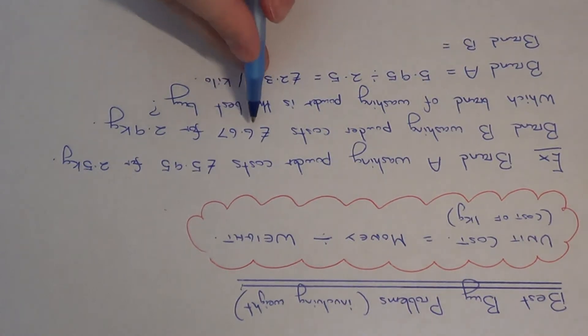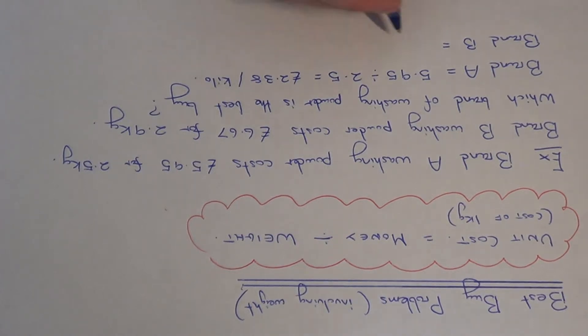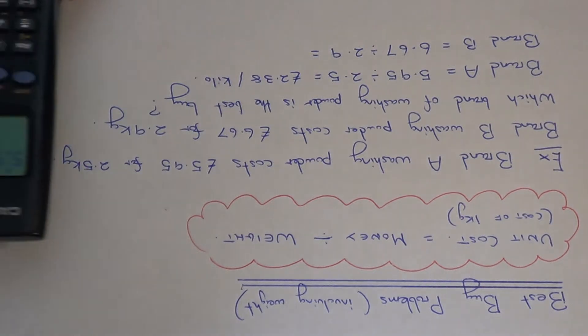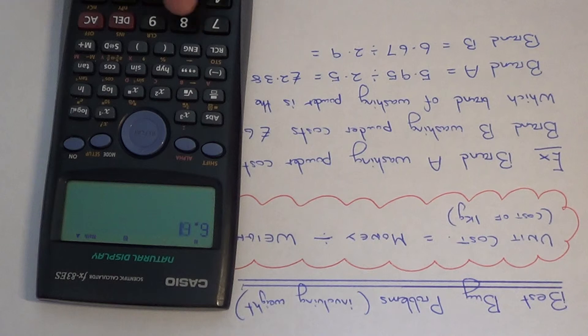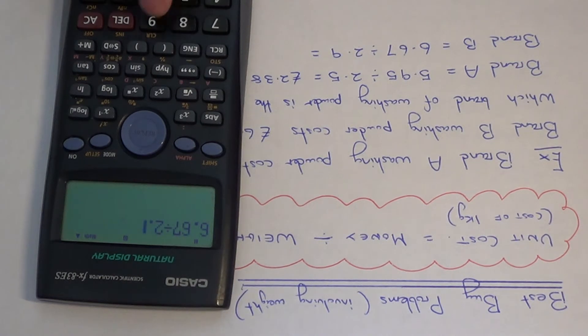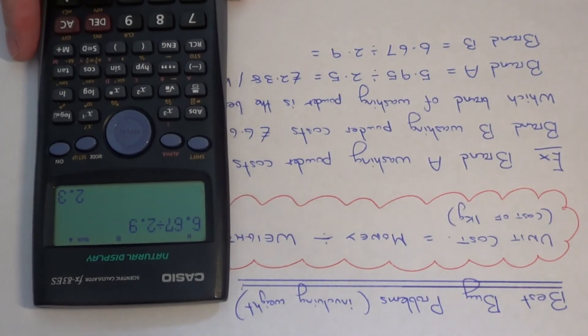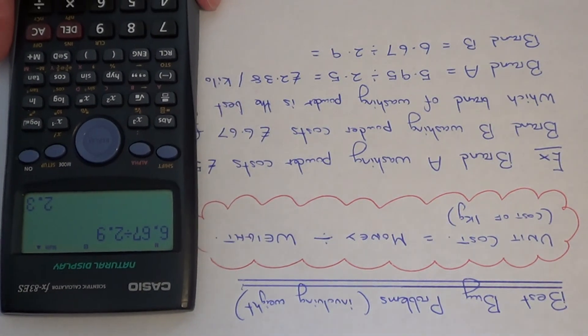So brand B washing powder costs £6.67 for 2.9 kilograms. So again we just need to divide the cost by how many kilograms we are buying, so that's 2.9. So again just put this on your calculator, so £6.67 divided by 2.9. This gives an answer of £2.30.